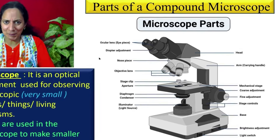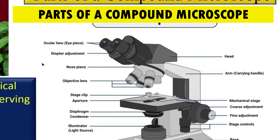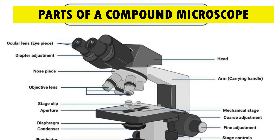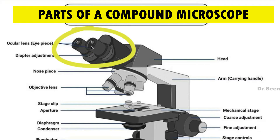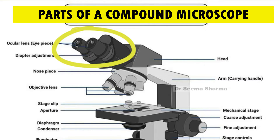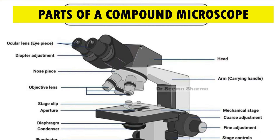First, basic parts of a compound microscope. We are starting with the top part. First is eyepiece. There are two eyepieces in this compound microscope. They have ocular lenses in them for magnifying the image of the object.